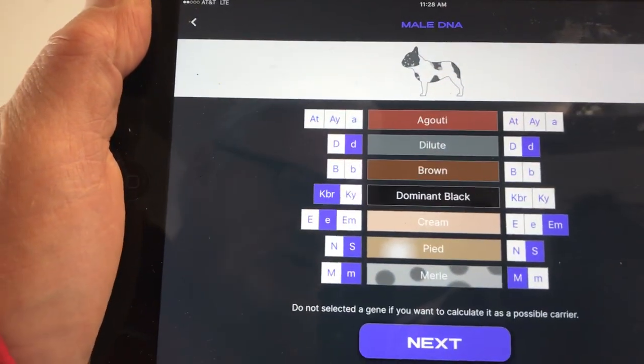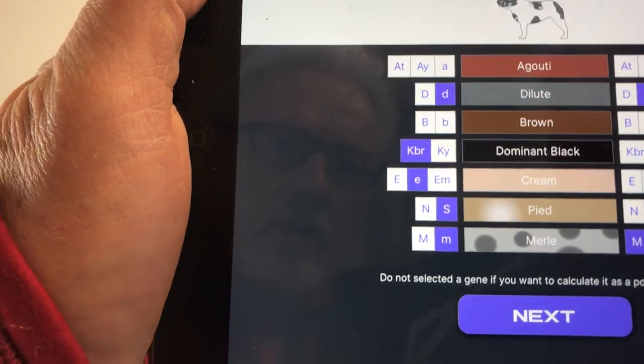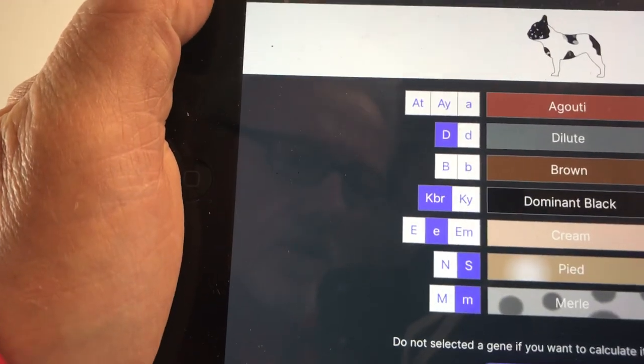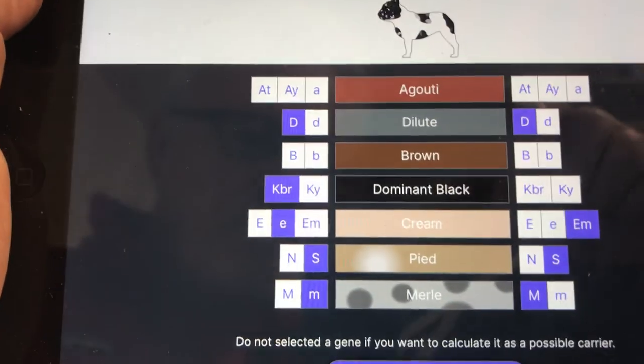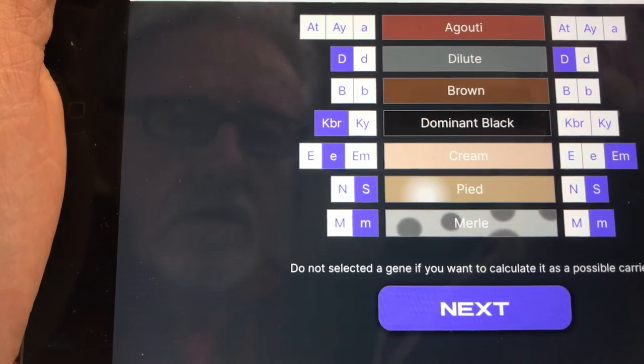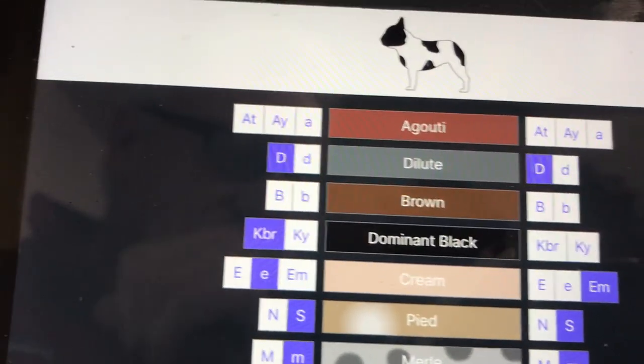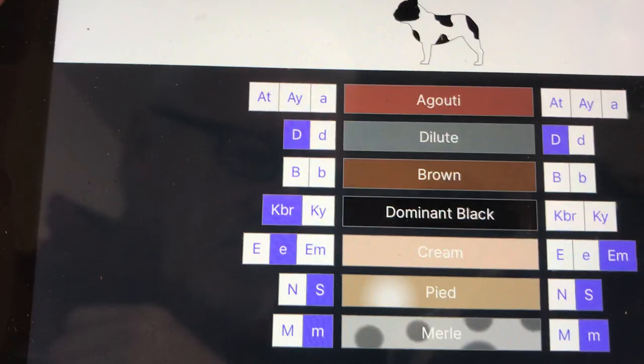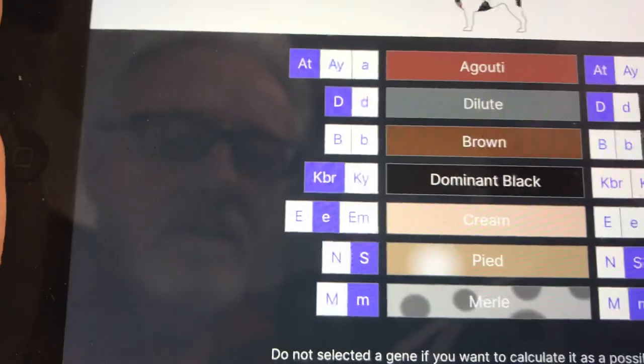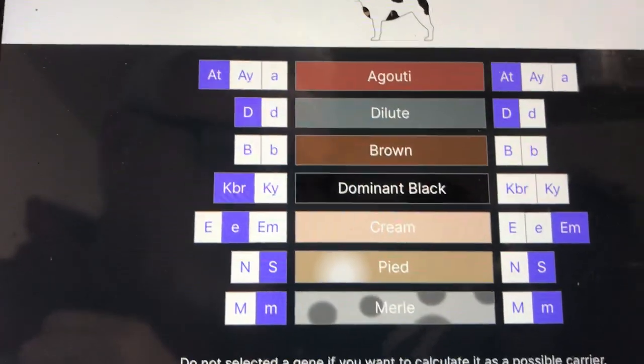So what you can do is you can put in genetics of both parents. So what we've got here is a regular, not blue dog, that doesn't have merle. It shows you exactly what you're gonna get on the top there, the color of the dog. And you can change things. For instance, let's make this ATAT dog and then it shows the tan point showing up on the dog.